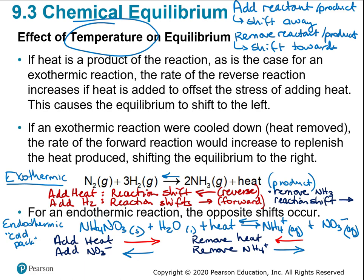Think of equilibrium like a seesaw. If I add to one side, that side gets too heavy, so the reaction shifts away to try and restore balance. If I remove from one side, that side is too light, so the reaction shifts towards it to bring it back into balance between the two sides.